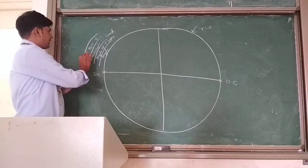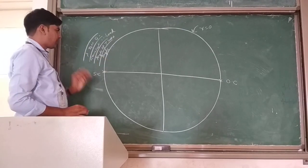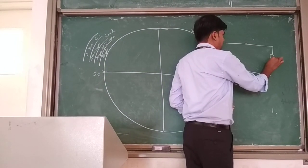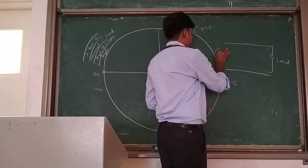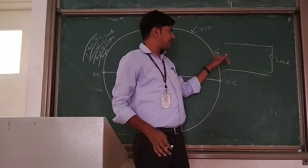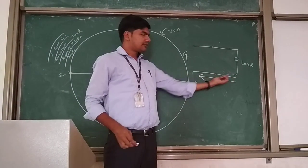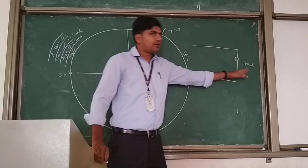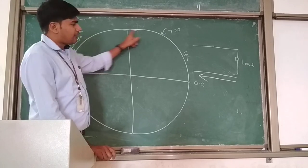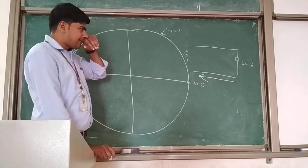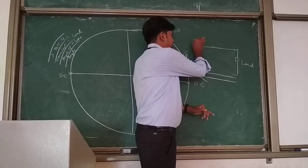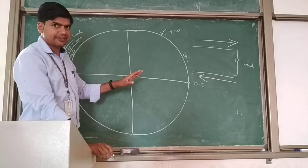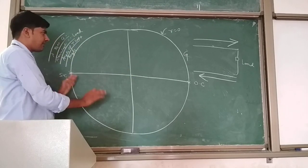We are going to discuss the values of wavelength towards generator and load. When you are moving from load to generator on a transmission line, you have to move clockwise on the Smith chart. Similarly, if you are moving from generator to load, you have to move anti-clockwise on the Smith chart. For these two different movements, scales have already been given on the Smith chart.